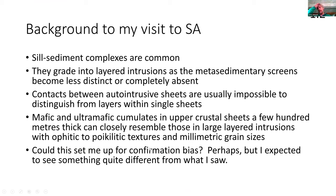So this is a very quick background — really the kind of thinking I had, the things I was used to seeing before I first went to South Africa — that sill-sediment complexes are common, and they sort of grade into layered intrusions as these screens between the sills become less distinct or completely removed by thermal erosion or different intrusive relations. Contacts between auto-intrusive sheets are usually impossible to distinguish from ordinary layering within single sheets once you lose that little bit of metasediment. The mafic and ultramafic cumulates found in sheets formed in hypabyssal contexts only a few hundred meters thick can very closely resemble the ones you find in large layered intrusions — you can see ophitic or even poikilitic textures, granular millimetric cumulates with intercumulus material.